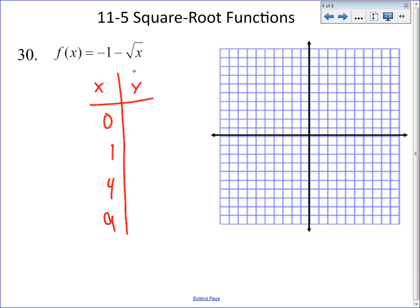So when we plug those in, now we have to consider this negative 1 and the minus. The square root of 0 gives us 0, and negative 1 minus 0 is just negative 1. The square root of 1 is 1, negative 1 minus 1 is negative 2. The square root of 4 is 2, negative 1 minus 2 is negative 3. And when we plug 9 in, the square root of 9 is 3, negative 1 minus 3 is negative 4.